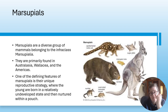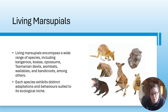Living marsupials encompass a wide range of species including kangaroos, koalas, opossums - or possums in Australia - Tasmanian devils, wombats, wallabies, bandicoots, amongst many others. Opossum is the word used for America's possums. Each species exhibits distinct adaptations and behaviours suited to its ecological niche.